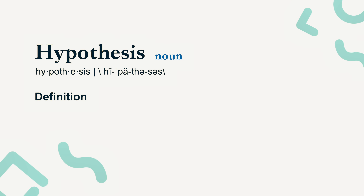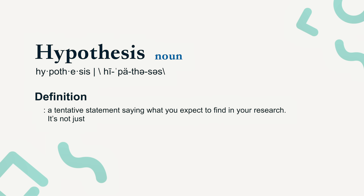So, what's a hypothesis? A hypothesis is a tentative statement saying what you expect to find in your research. It's not just a random guess, but a prediction based on existing knowledge. Now we'll grab an apple and munch on it while we dive into this topic. Here are 6 steps to formulate a strong hypothesis.